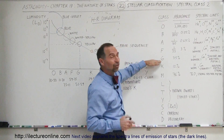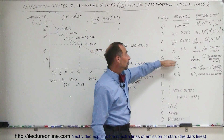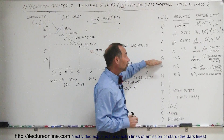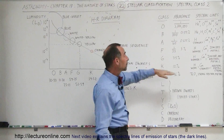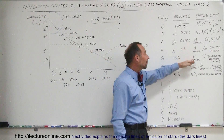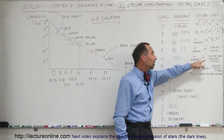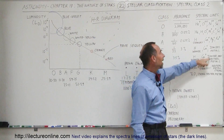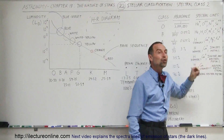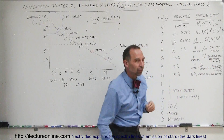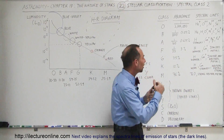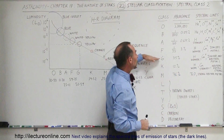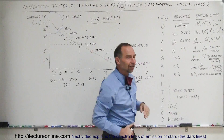The G-class stars — the type like our Sun — are in abundance at about 7.5% of all stars, almost 1 in 10. The hydrogen lines are weaker again, and there is still ionized calcium. What separates them from F-class stars is that not only do they have ionized metals, they also begin to show neutral metal lines in the spectrum. When we start seeing spectral lines of neutral metals, we know we're looking at a G-class star.